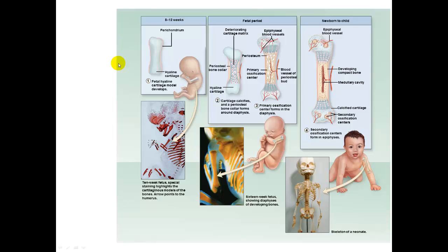Welcome to this video on the skeletal system: endochondral ossification. Endochondral ossification produces most bones of the skeleton, including the bones of the upper and lower limbs, the pelvis, the vertebrae, and the ends of your clavicles or collarbones.